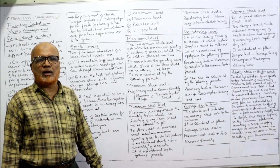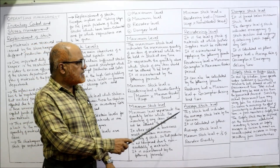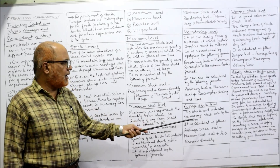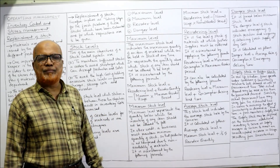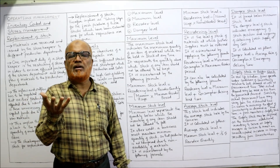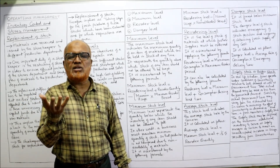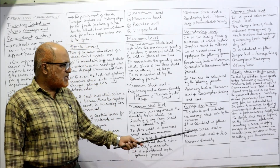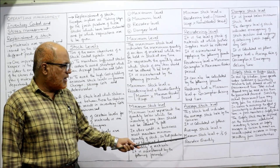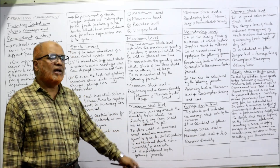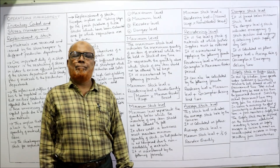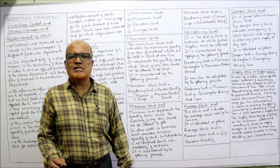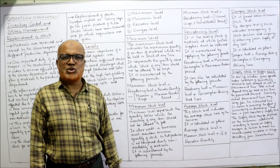Average stock level indicates the average stock held by the concern — that is, on average, how much inventory a business normally holds. The formula for average stock level is: Average Stock Level = Minimum Stock Level + ½ × Reorder Quantity.